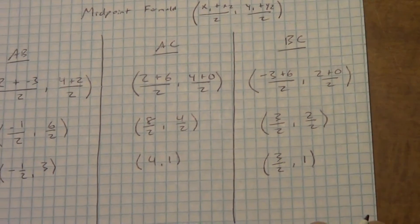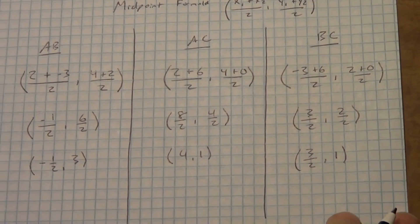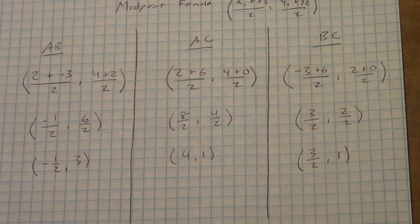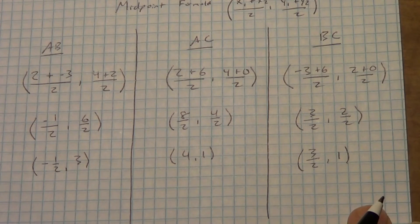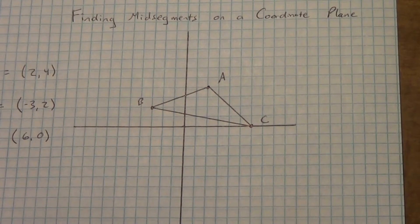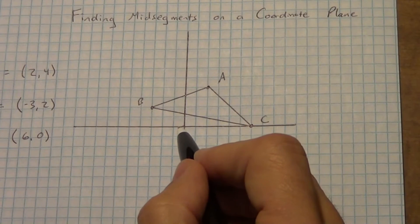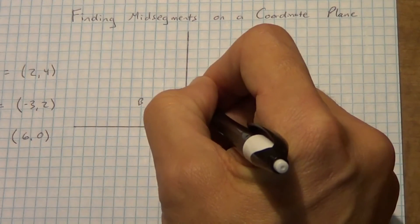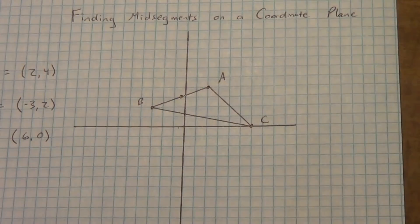We have all the points we need to graph: negative one-half comma 3, then 4 comma 2, and 3 halves comma 1. We're going to graph those three points on our original triangle. Starting with negative one-half comma 3 — going to negative one-half on x and up to 3 on y — and putting a dot right there. That looks pretty good; it looks like it's right in the middle of segment AB.